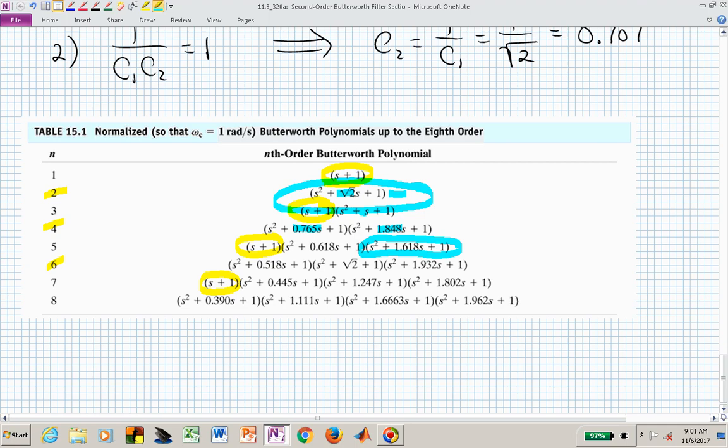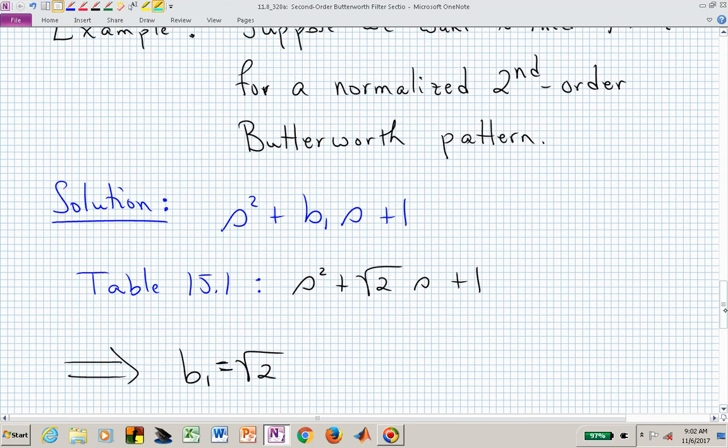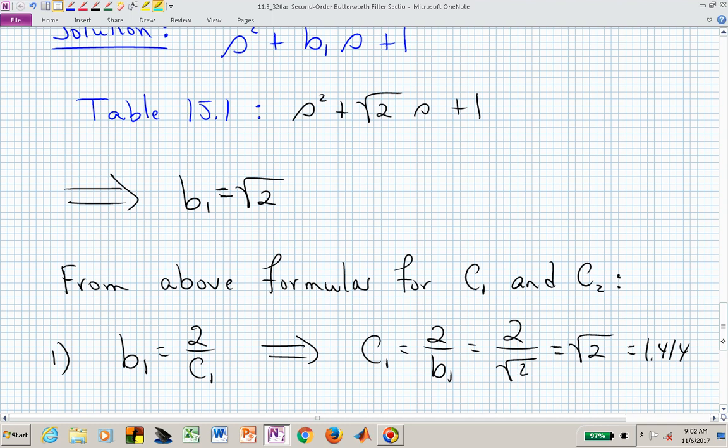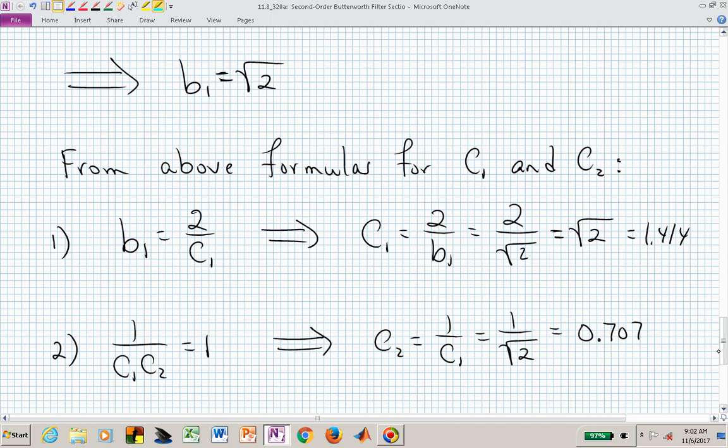So let's go ahead and look at what that looks like for a particular second-order Butterworth pattern. So let's now find C1 and C2 for a second-order filter, which means that we're now dealing with this particular factor in table 15.1, and we now know that B1 is this square root of 2. If B1 is now the square root of 2 from table 15.1, we're just using that as an example, then we apply the formulas for C1 and C2. B1 being 2 over C1 says that C1 is 2 over B1. B1, we just found it from table 15.1 for a second-order filter, is the square root of 2. So now we know that C1 is 2 over the square root of 2, or the square root of 2, which is 1.414. Once we've found C1, we know from this comparing of coefficients that C2 is the reciprocal of C1. So now C2 is 1 over the square root of 2, and that's 0.707.